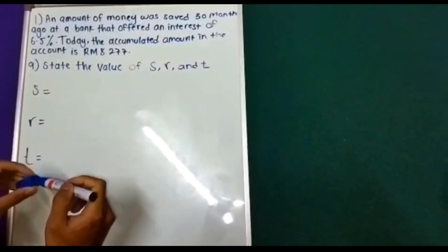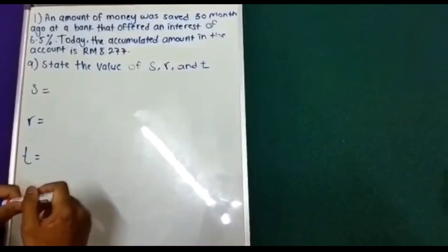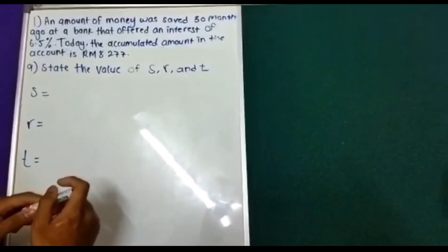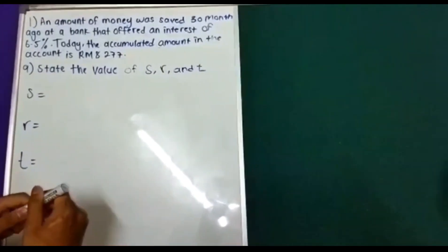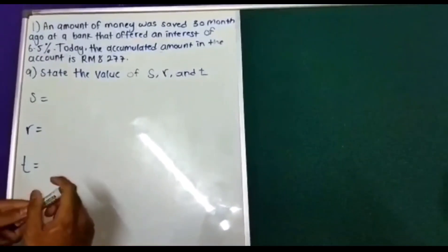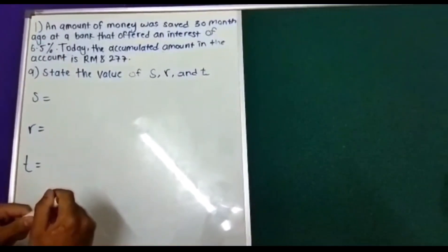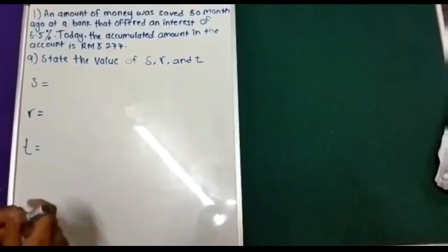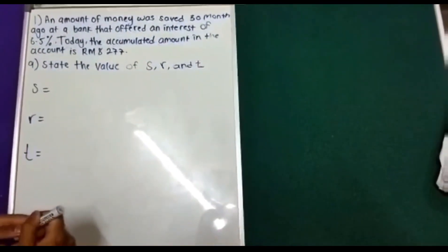This is the first question for simple interest. Question 1. An amount of money was saved 30 months ago at a bank that offered an interest of 6.5%. Today, the accumulated amount in the account is RM8,277.